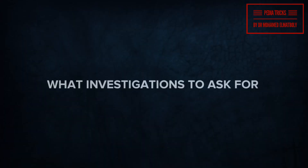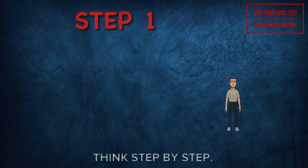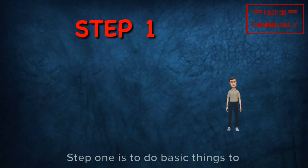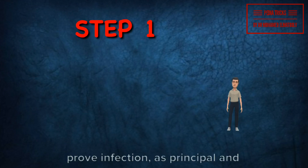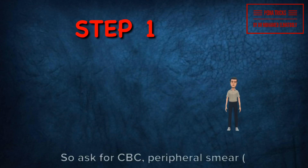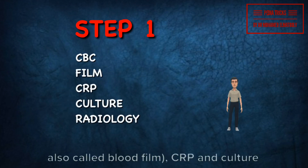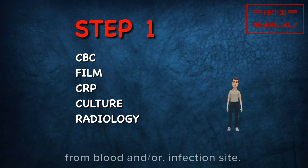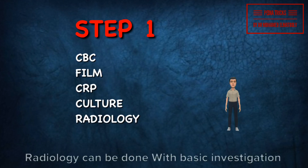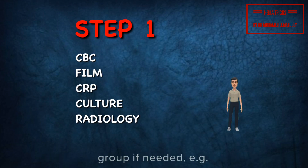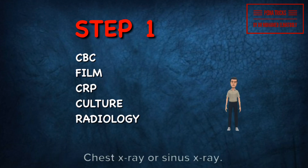What investigations to ask for? Think step by step. Step one is to do basic things to prove infection as principle and site. So ask for CBC, peripheral smear (also called blood film), CRP, and culture from blood and/or infection site. Radiology can be done with the basic investigation group if needed — for example, chest X-ray or sinus X-ray.